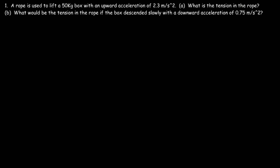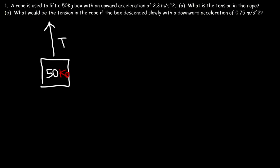In this video we're going to focus on solving tension problems. A rope is used to lift a 50 kilogram box with an upward acceleration of 2.3 meters per second squared. What is the tension in the rope? The box is being lifted up by the rope, and the force that acts along a rope is the tension force. How can we calculate this tension force?